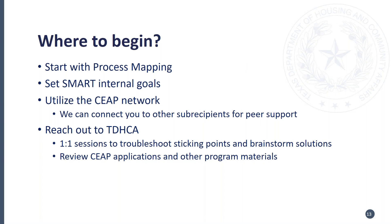To know where to begin, start with process mapping. Clarify what your current process is — even if as you're writing it out you're questioning why you're doing something. Write down every single step, who's responsible for it, how much time it takes, and then see if every step is necessary from beginning to end. Find sticking points, see what you can streamline, and reduce unnecessary duplications in staff efforts. Ensure your database has automation built into the system, ensure you have the right staff in the right roles, and have data you can track to see your progress. Set SMART internal goals — Specific, Measurable, Achievable, Relevant, and Time-bound. If you know that your CIAP process has room for improvement, look at what kind of internal goals you can set and use data to track how you do.